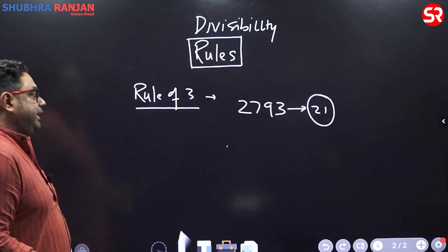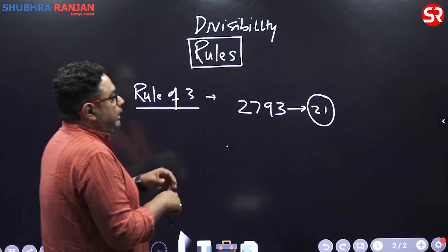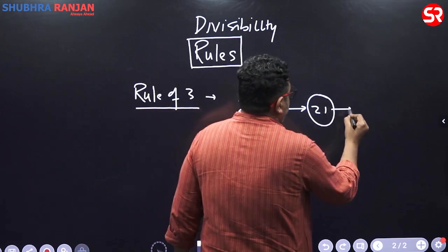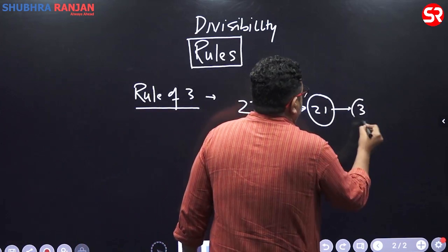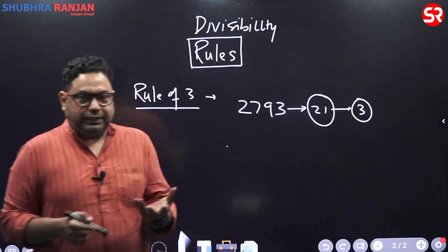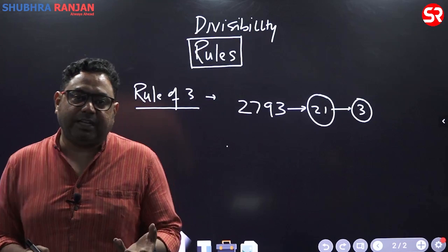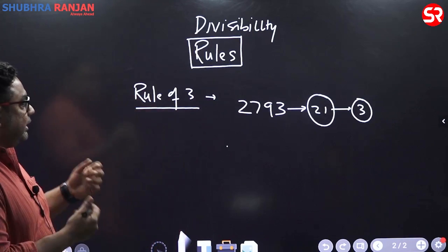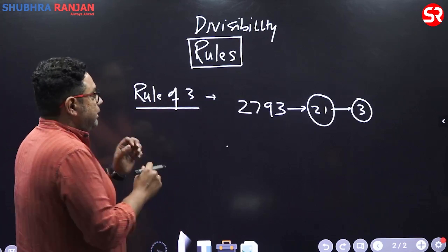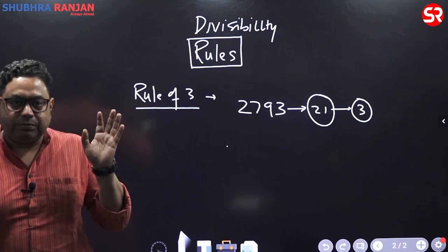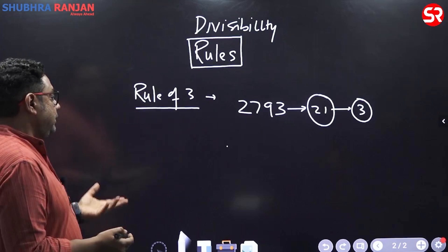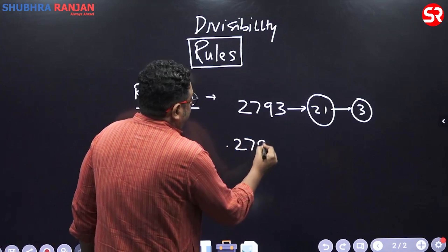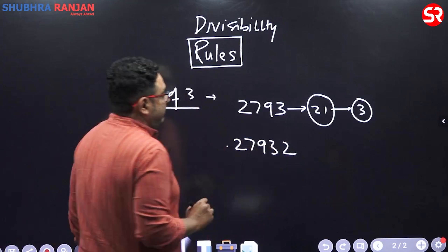My tip is: once you get the digit sum, keep reducing to a single digit. 21 → 2+1=3. If that single digit is exactly divisible by 3, the number is exactly divisible by 3. For example, what would be the remainder when 27932 is divided by 3?